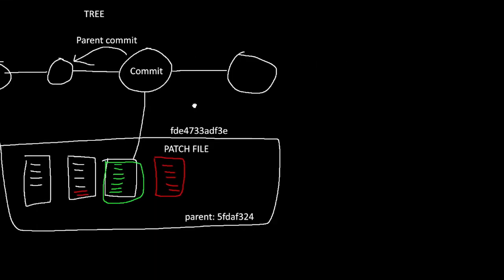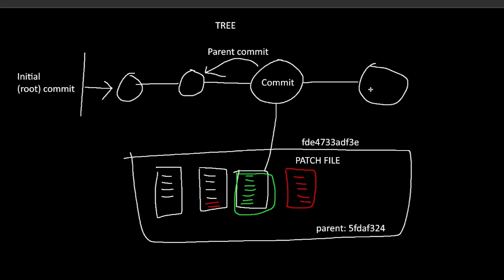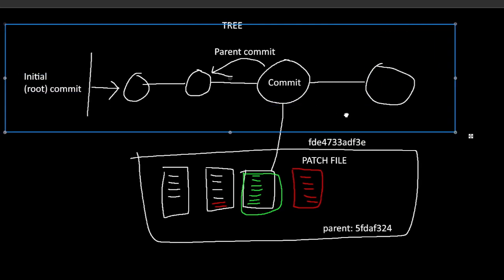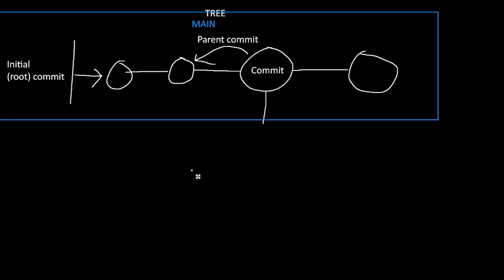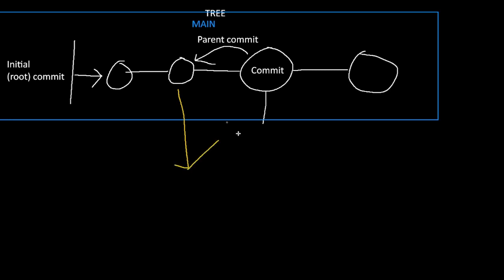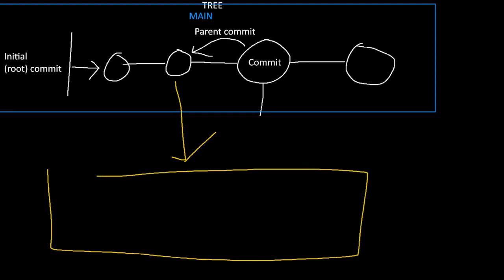Say this is the main tree used by everything, and you want to make some changes but you don't want it to affect the main version. You could do something like this, where you copy it at a certain point. Say the main tree is getting updated still, and you copied it right here. So now you have created a new tree.